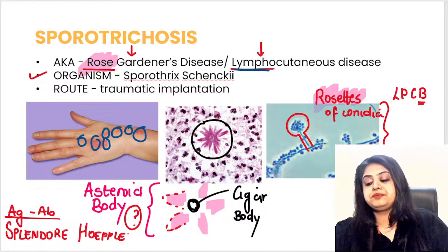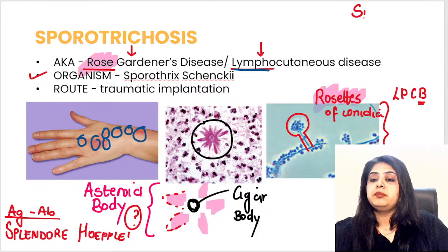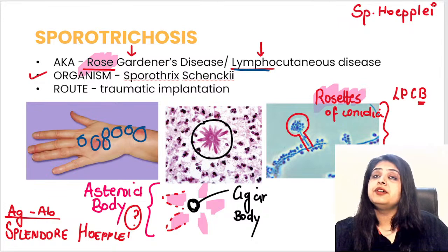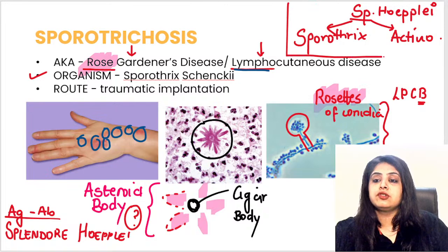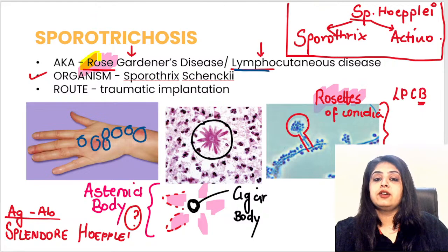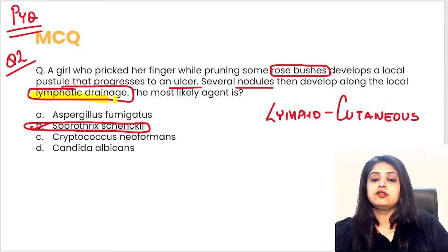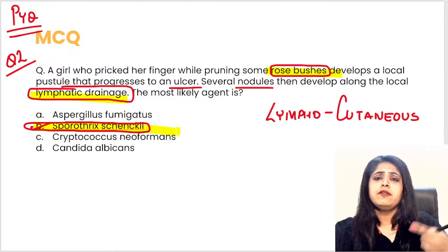The Splendore-Hoeppli phenomenon is seen in two organisms in microbiology: Sporothrix schenckii and Actinomyces. To summarize Sporothrix schenckii: rose gardener's disease, rosettes of conidia, asteroid body, cigar body, lymphocutaneous spread.